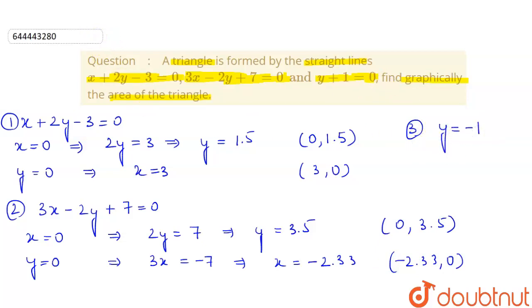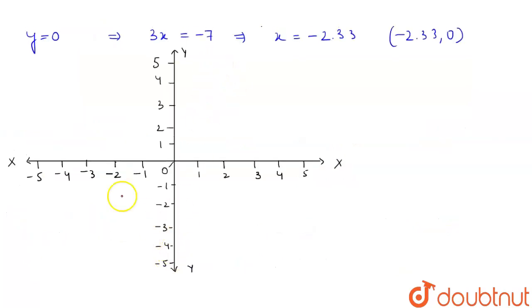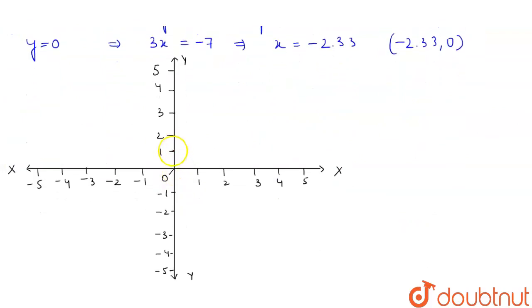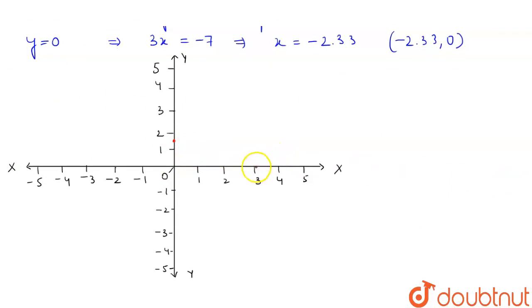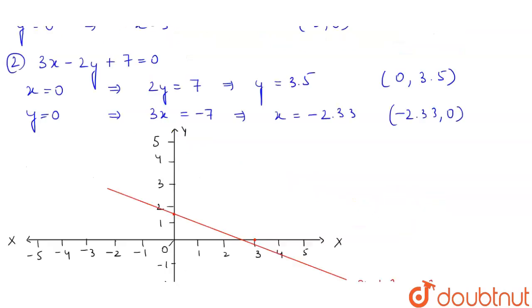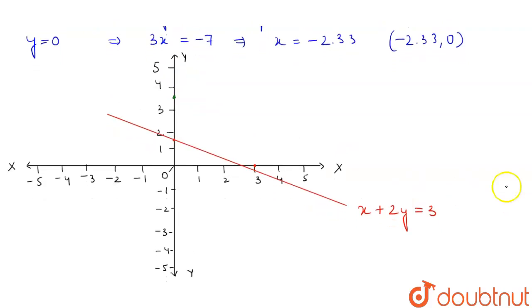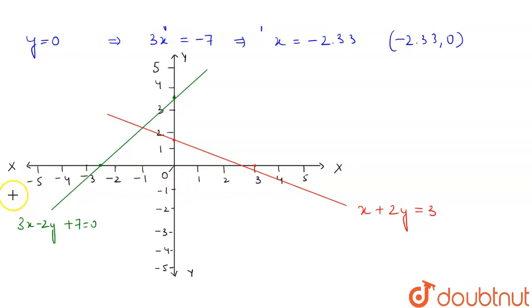Now we will plot our graph. This is the y-axis and this is the x-axis. For our first line, we plot (0, 1.5) — which lies between 1 and 2 — and (3, 0). Joining these gives the line x + 2y = 3. For our second line, we plot (0, 3.5) and (-2.33, 0), giving the line 3x - 2y + 7 = 0. We then draw y = -1, a line parallel to the x-axis. We can see the triangle formed.